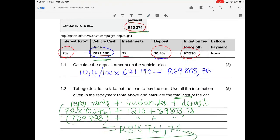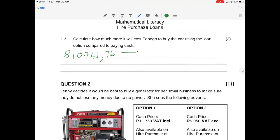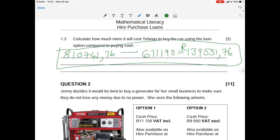That is what we're going to subtract from the total loan price. And it will give us a total difference of R139,551.76. So that is the answer to this question.